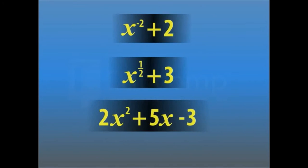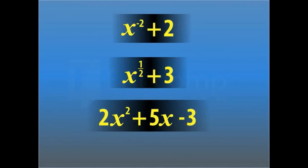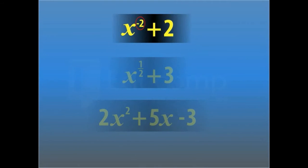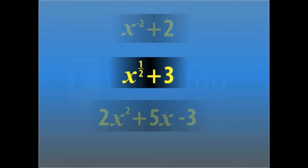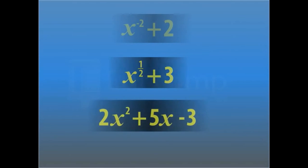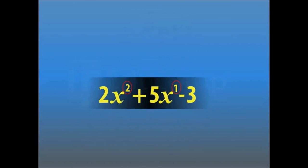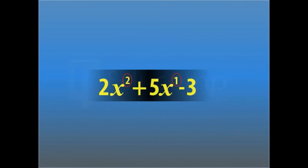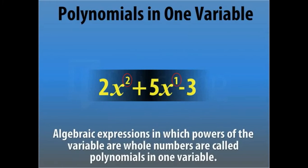Now look at these algebraic expressions — they all have one variable. In the first algebraic expression the power of x is negative. In the second, the power of x is a fraction. In the third, the powers of x are whole numbers. Such algebraic expressions in which the powers of the variable are whole numbers are called polynomials in one variable.